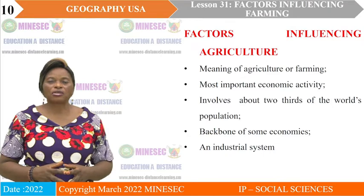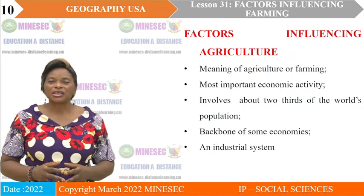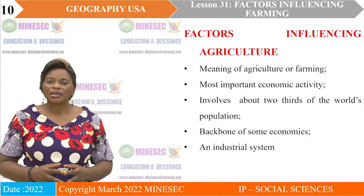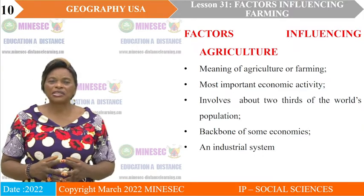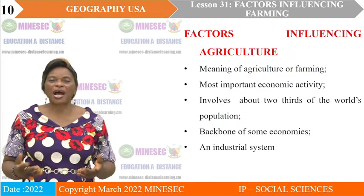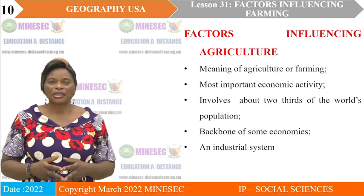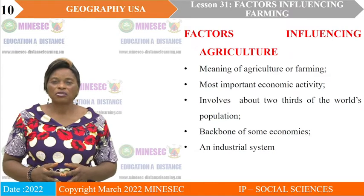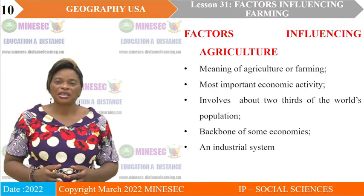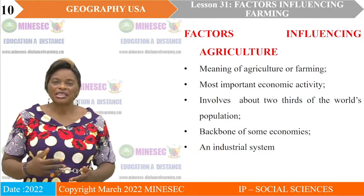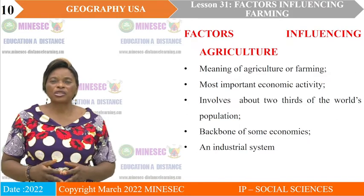Factors influencing agriculture. What is agriculture? Agriculture is the cultivation of crops and the rearing of animals either for home consumption or for sale. It is a very important economic activity because it feeds the population. Agriculture is practiced worldwide and involves about two-thirds of the world's population.